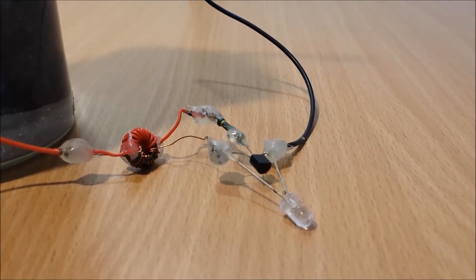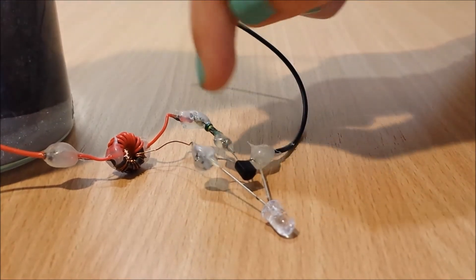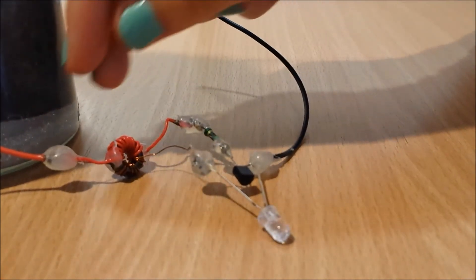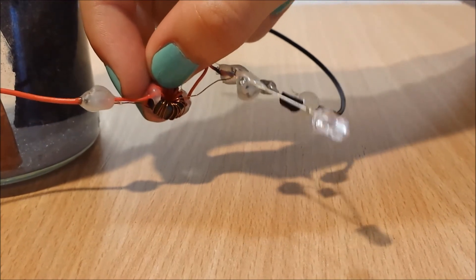It consists of an NPN transistor, a resistor, and a ferrite toroid with a copper wire wrapped around it.